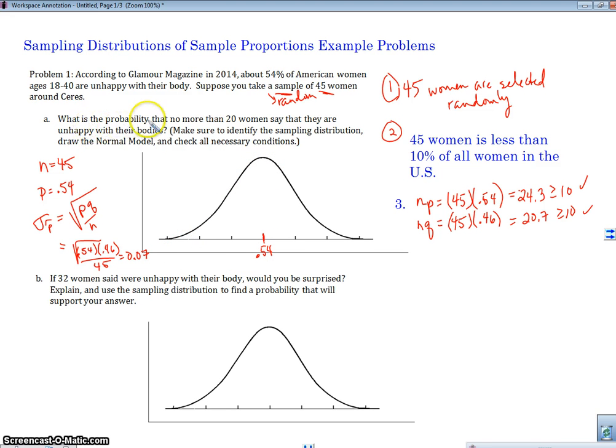So what is the probability that no more than 20 women say they are unhappy with their bodies? No more than 20 women. So this is a number here. It's not a percentage. And our normal model here is based on percentages. So let's go ahead and change this to a percent. Our P-hat is going to be 20 out of 45.